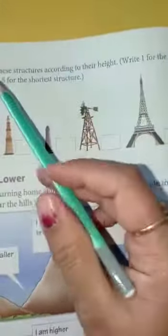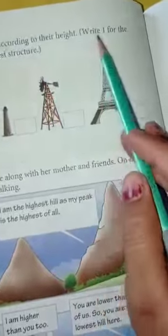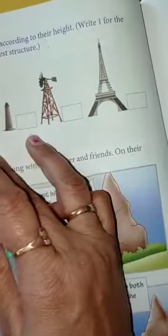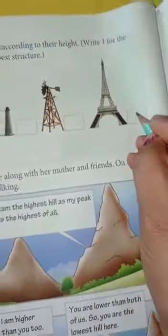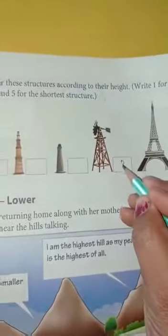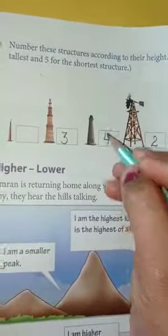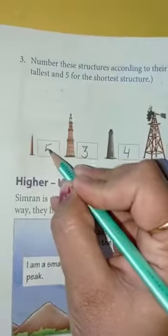It's very easy, bete, bhoat easy concept. Number these structures according to their height. Write one for the tallest and five for the shortest. Dekho, kaisi karenge? One — then second number, two aega. This one is three, then four. And the smallest one — small jo hai ga? Five.